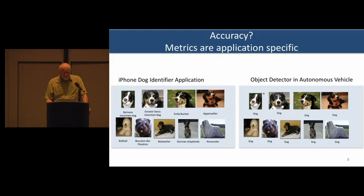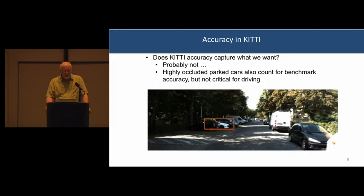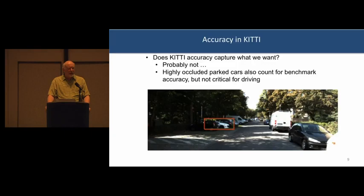When we look at accuracy, there are metrics tuned to autonomous driving, like accuracy on KITTI. Does KITTI give us what we need? Probably not. It doesn't distinguish really between being able to identify each individual occluded car individually — if you don't, that impacts your accuracy — versus a pedestrian right in the roadway. If you miss those, they're treated as equal value.